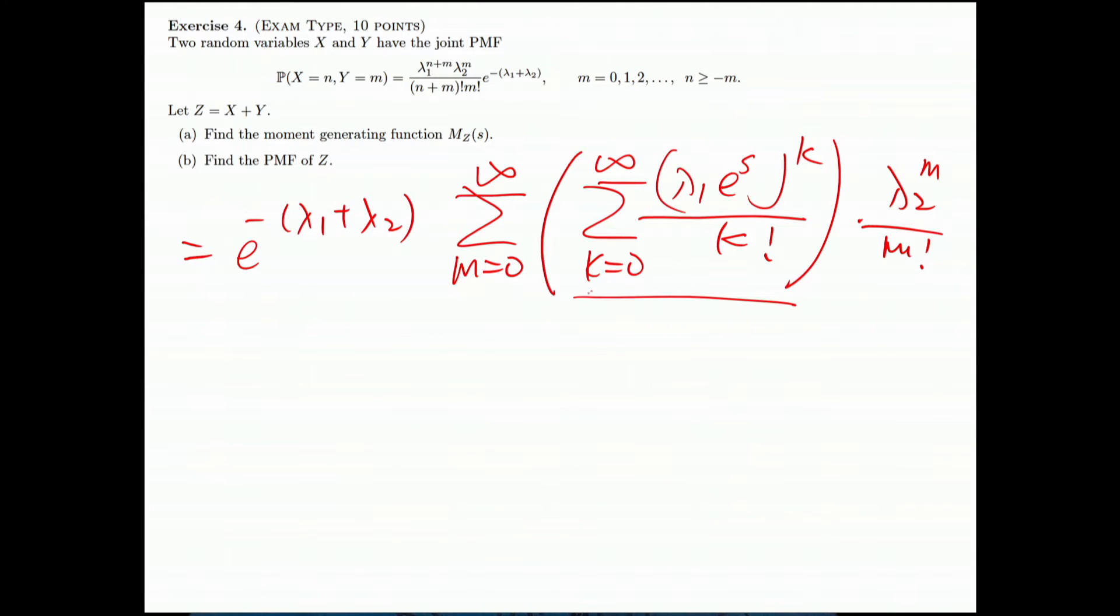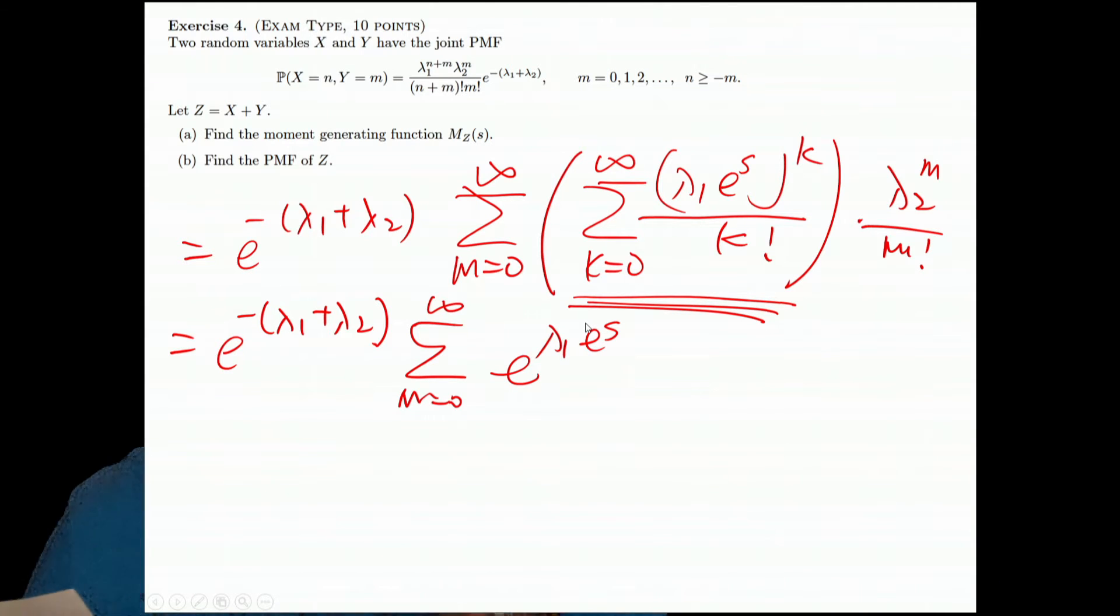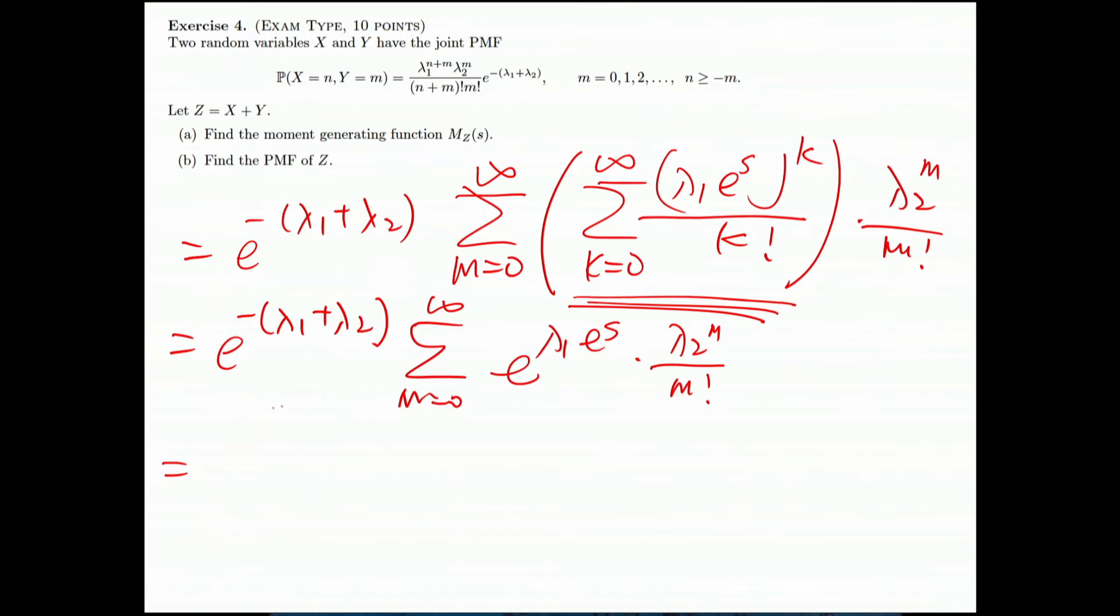So what is this? Now we copy the same thing: m equals zero to infinity, this is exponential λ₁e^s times λ₂^m over m!. And this is finally e to the λ₁(e^s - 1).